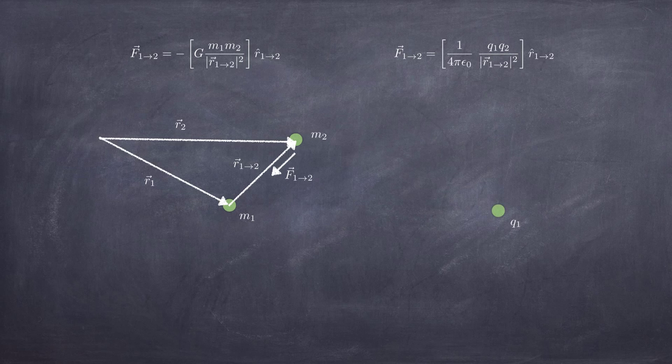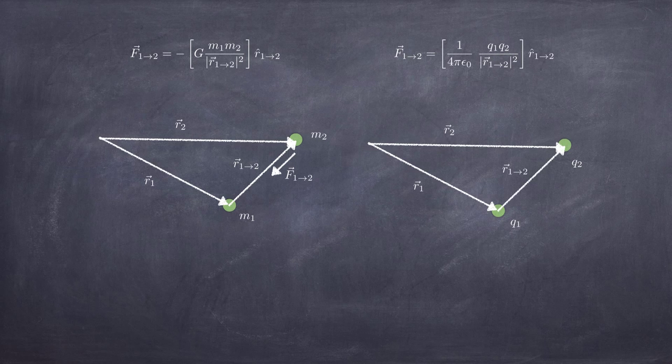Coulomb's law is similar. You have a charge Q1, a charge Q2. They have position vectors that work out exactly the same way. But, the force in this case is repulsive. There's no minus sign. So, if Q1 and Q2 are both positive, you end up with a repulsive force, because R12 hat points from charge 1 to charge 2. But, if the charges have opposite sign, then the product of the two charges is negative, and the force turns out to be attractive.